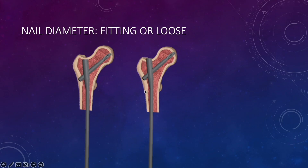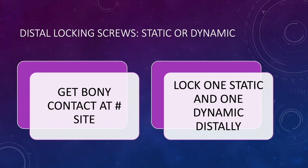Be careful: do not release the reduction maneuver unless you have locked the proximal screws distally as well. For distal locking screws, first try to get maximum bony contact at the fracture site before placing any screw in the distal segment. Always put one static and one dynamic screw distally. You need to have the option of dynamization — if you put only a dynamic screw without a static screw, there will be excessive motion at the fracture site, which can result in hypertrophic non-union. So it is better to achieve bony contact and put both screws distally.